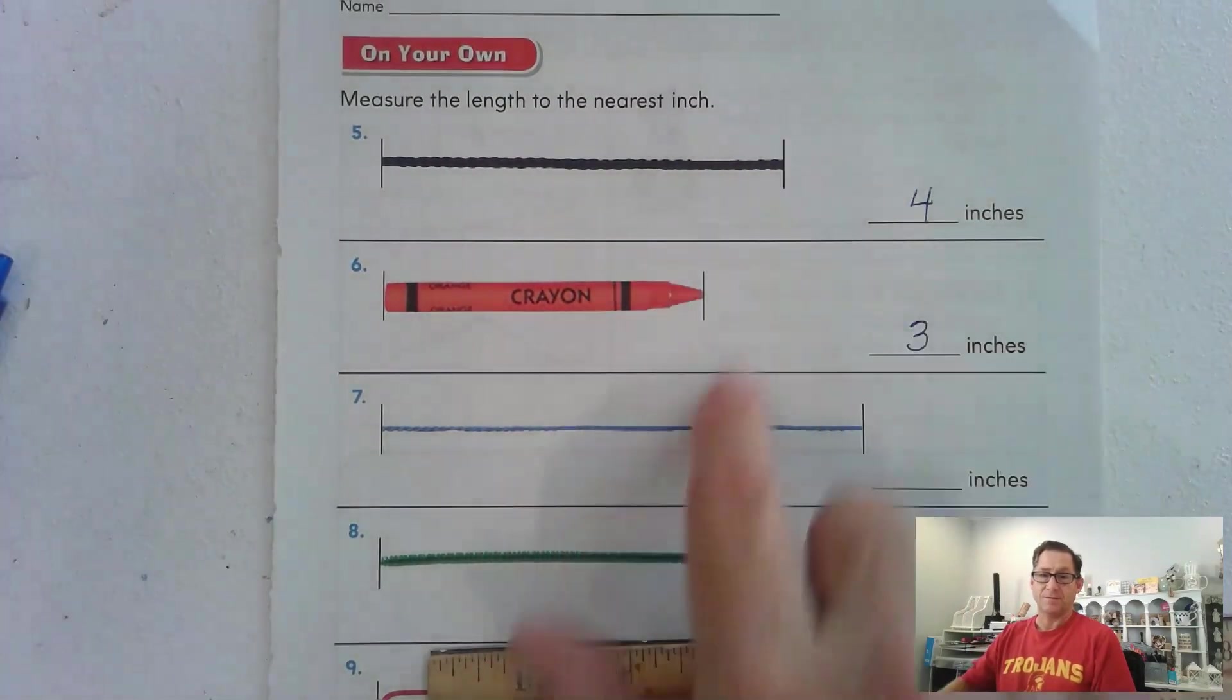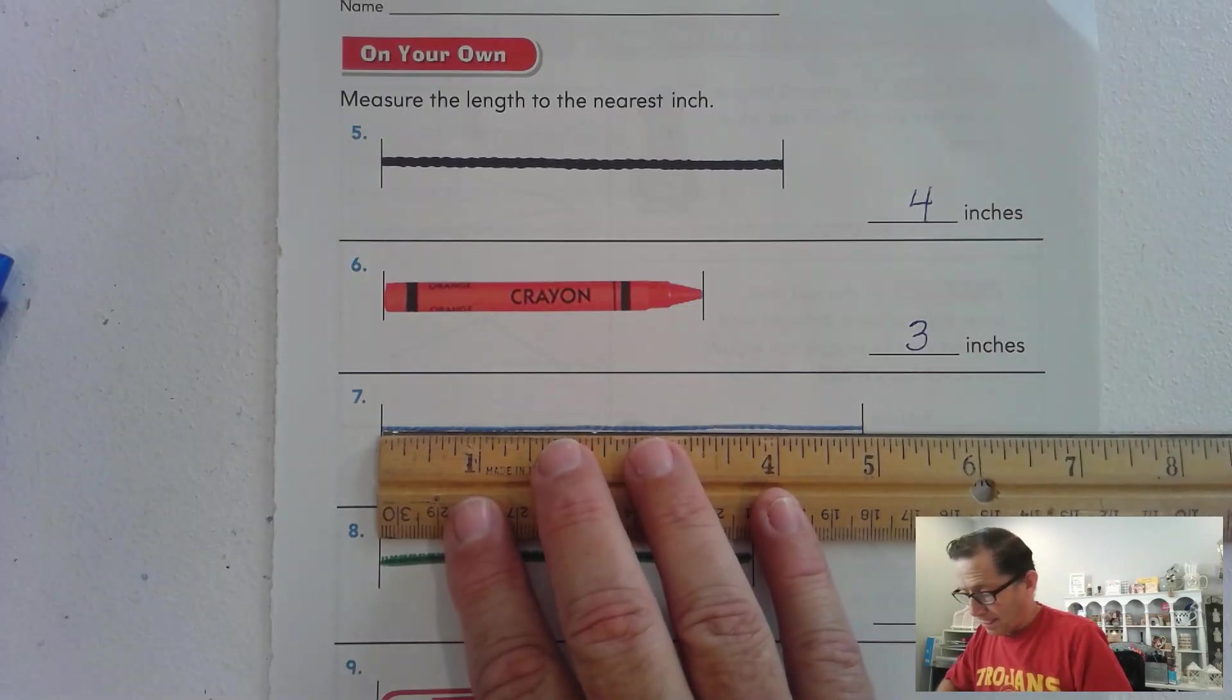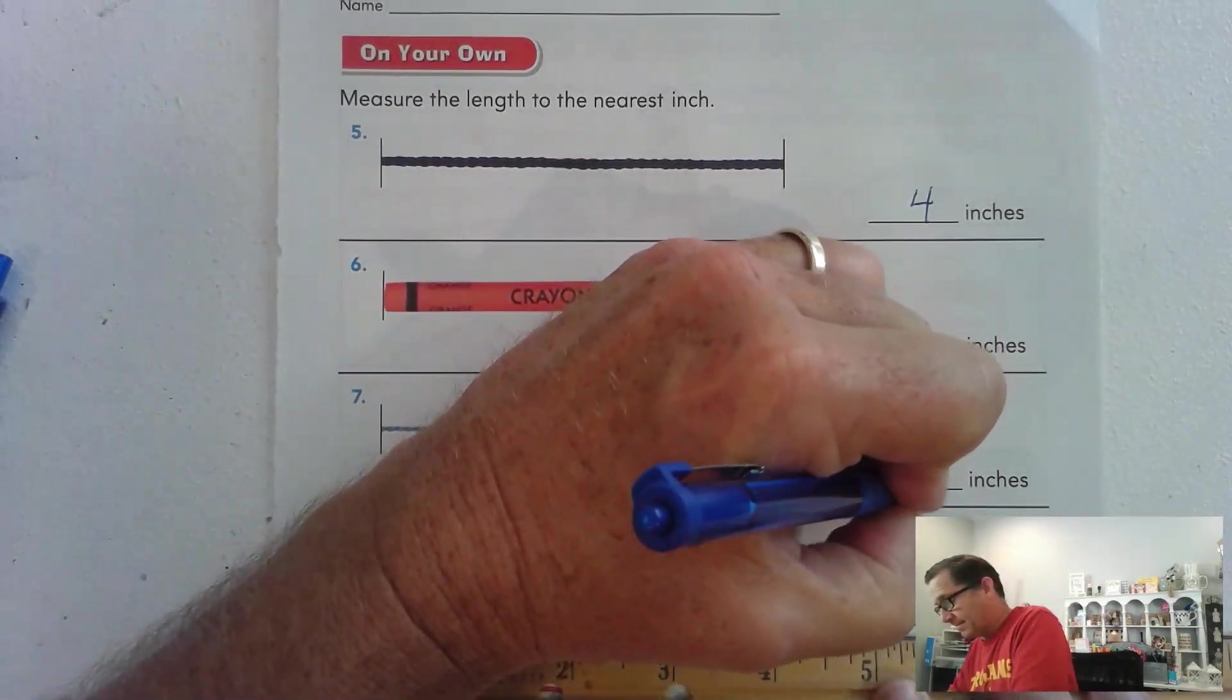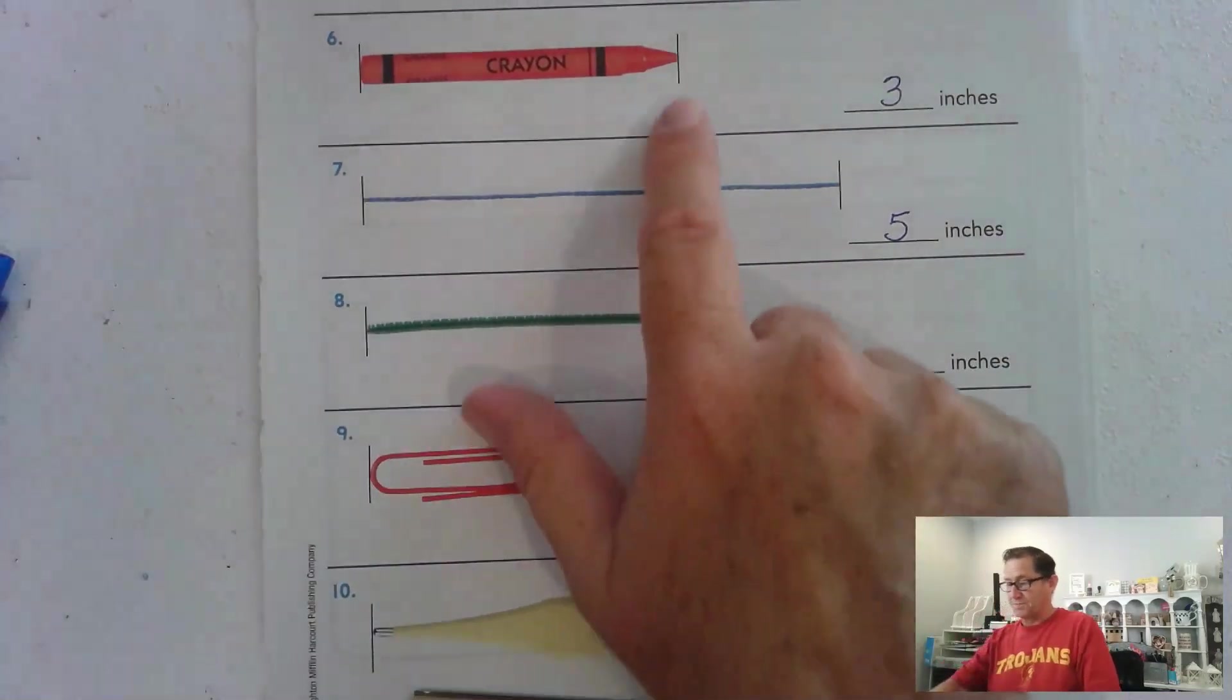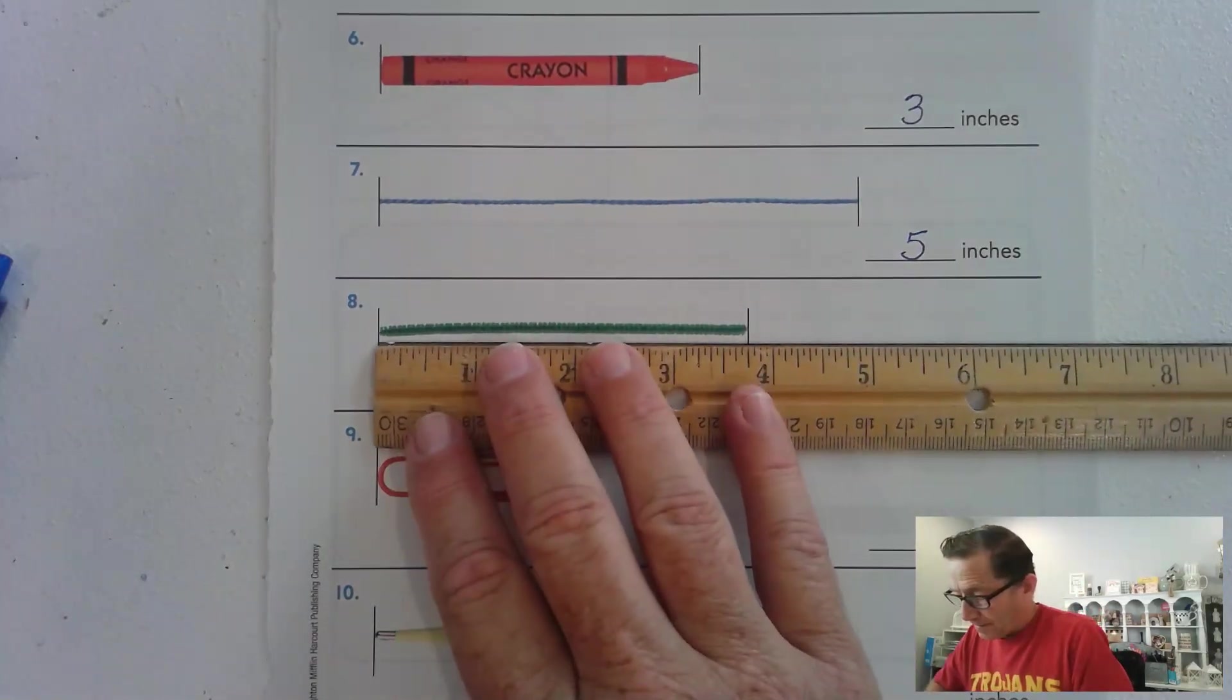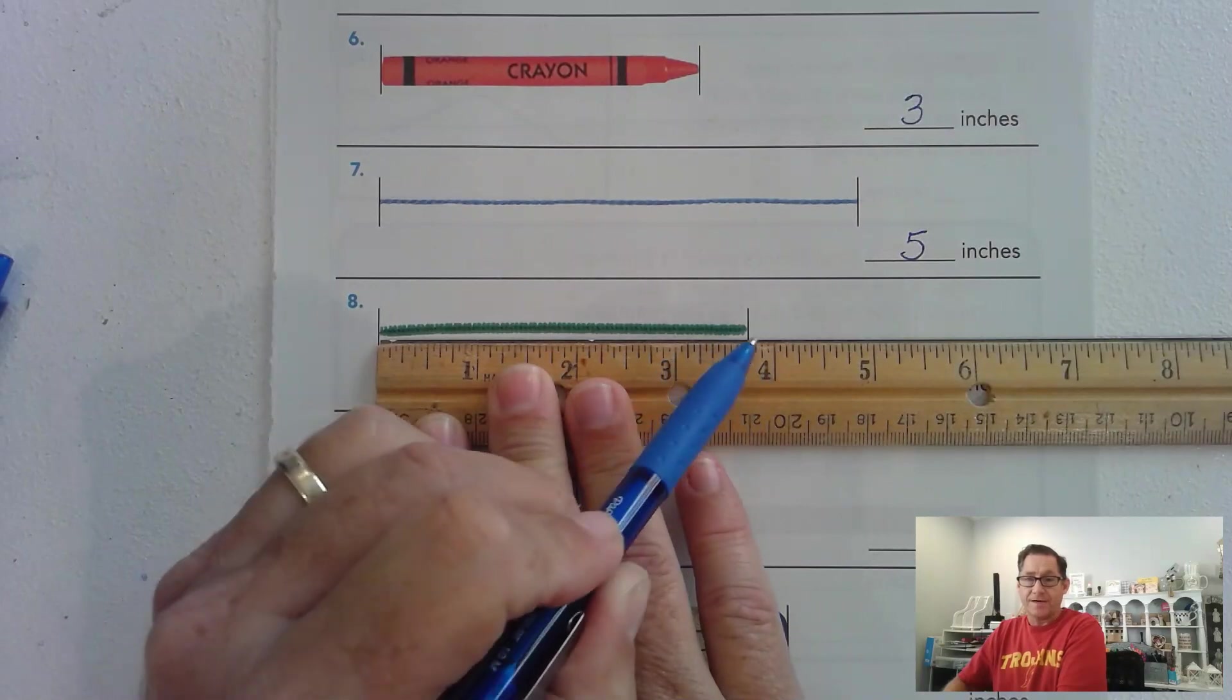I'm going to guess that this one's longer than four, probably is going to be close to five. So it's past that halfway mark. So it's closer to the five. Let's move on to number eight. So this one's just barely past the three. So it might also be three inches or it could be four. Well, let's see. It is closer to the four inch mark, right? Than it is the three. So four inches.